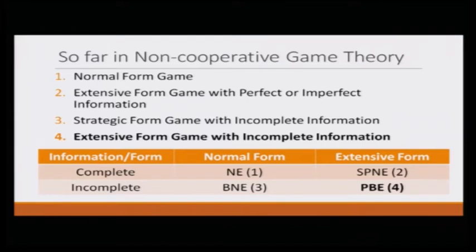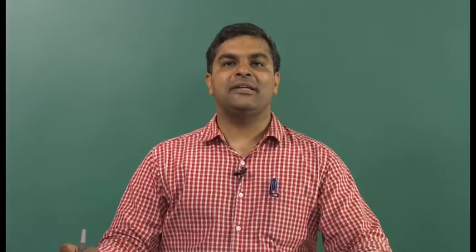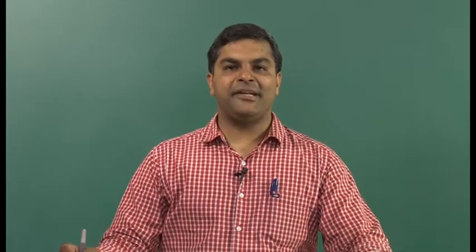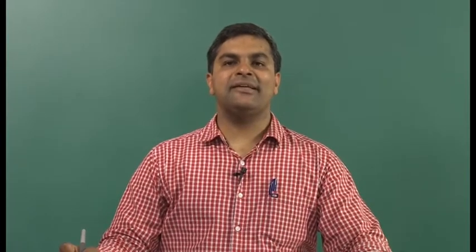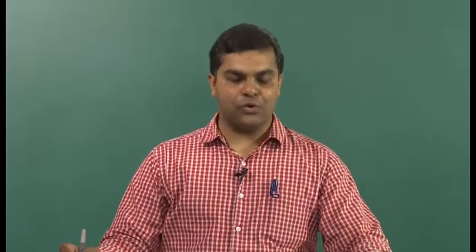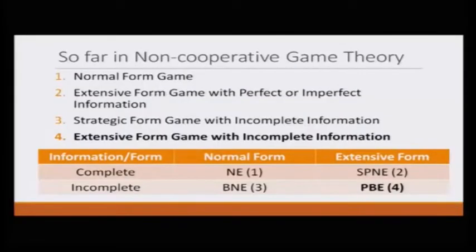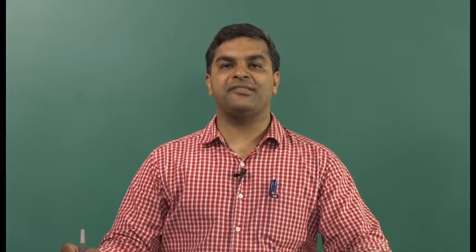After that, Aditya talked about a strategic form game again, but this time in an incomplete information setting, and there you learned the concept of BNE — Bayesian Nash equilibrium. The fourth topic, starting from this module, is extensive form game with incomplete information, and there we will learn a new solution concept called perfect Bayesian equilibrium.